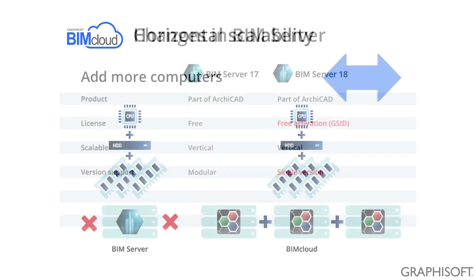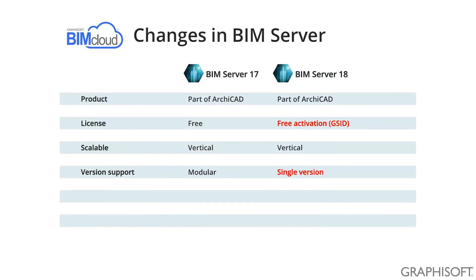There are two differences between BIMserver 17 and 18. The first is that BIMserver 18 requires an activation, which is free, prior to its first use. The second is that BIMserver 18 limits the number of modules to 1, while BIMserver 17 and earlier versions allowed the installation of multiple modules to the same BIMserver. In the future you will be able to install multiple different version BIMservers to the same computer, but they will have to be managed separately.